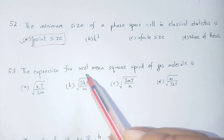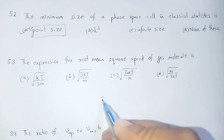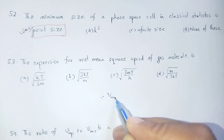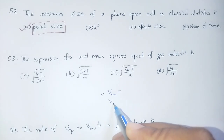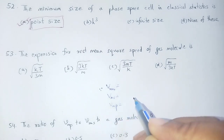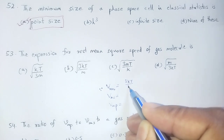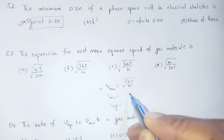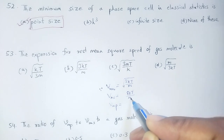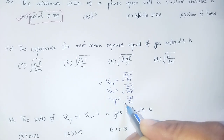Question 53: The expression for root mean square speed of a gas molecule. The root mean square speed, called v_rms, is √(3kT/m). The average speed v_average is √(8kT/mπ). The most probable speed v_mp is √(2kT/m).